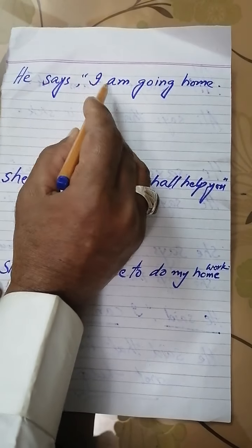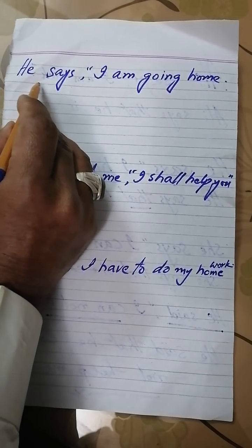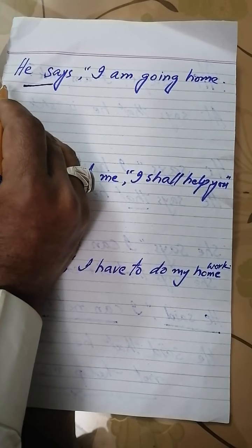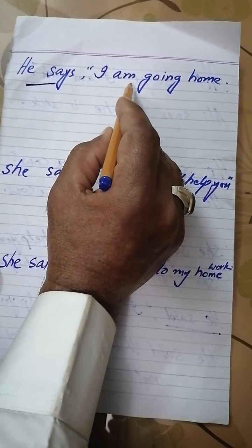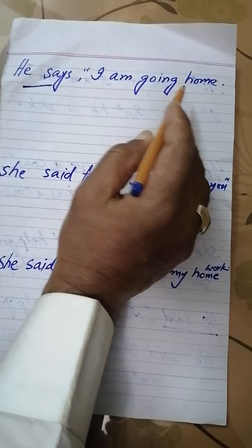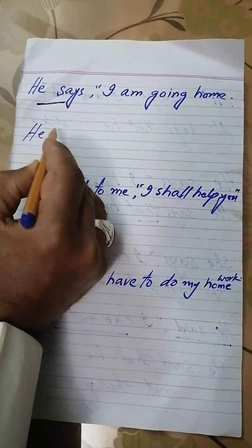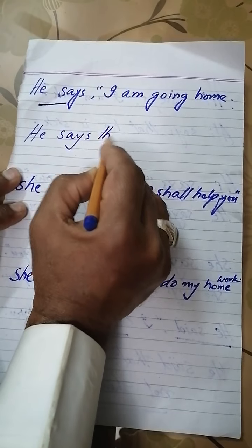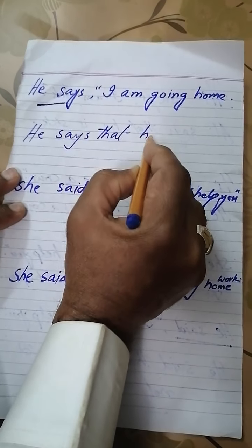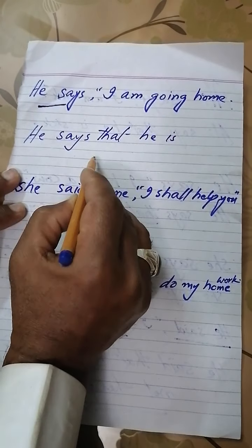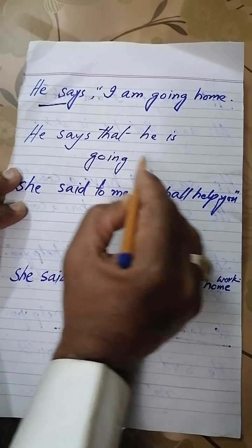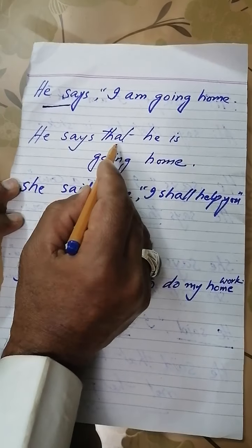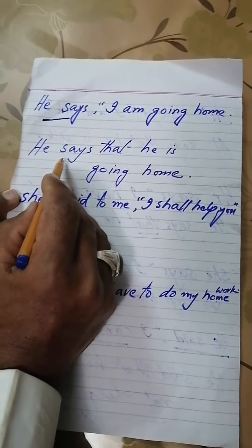Here is another sentence: 'He says I am going home.' Now this part — reporting speech is based on simple present, whereas the reported speech is based on present continuous. So the indirect narration is: he says that he is going home.